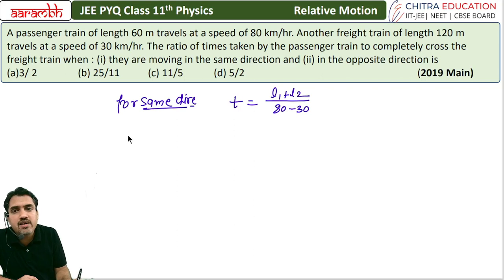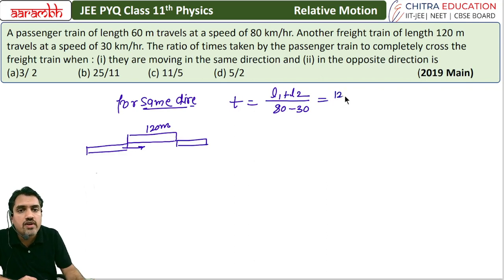If we take the freight train length of 120 meters, and the passenger train is crossing it, the relative distance to completely cross will be 120 plus 60. The relative velocity will be 80 minus 30, that is equal to 50.